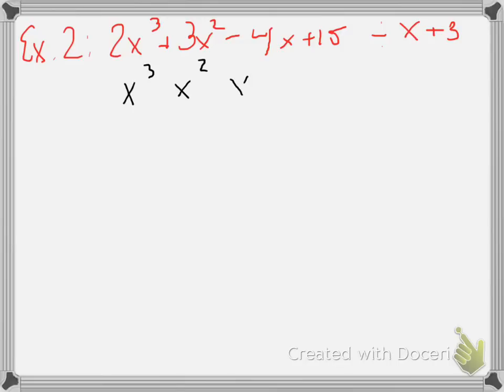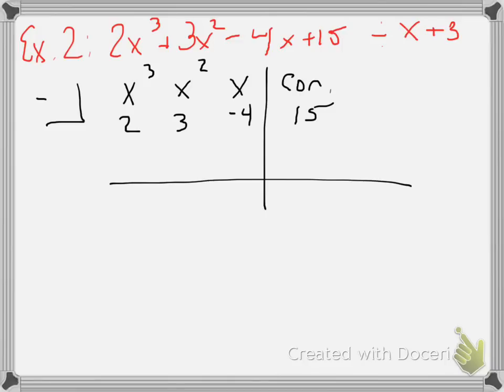Let's try another one. So we have 2x³ + 3x² - 4x + 15 divided by x + 3. So again, we'll set this up. Our table, we have an x³, x², x, and constant column. The coefficient for x³ is 2. The coefficient for x² is 3. The coefficient for x is -4, and then our constant is 15. So that's the numbers that will go in our table. Then we put in our box for our divisor. And in this case, we're doing x + 3. So we put the opposite sign in, so we put in a -3.